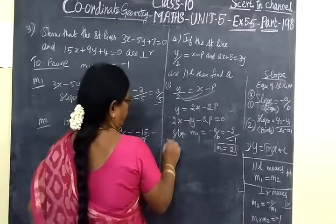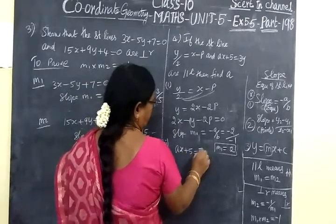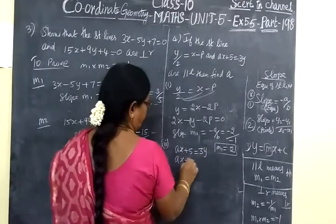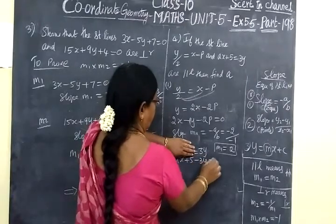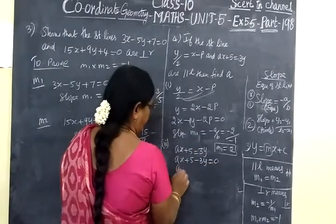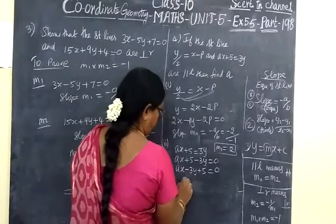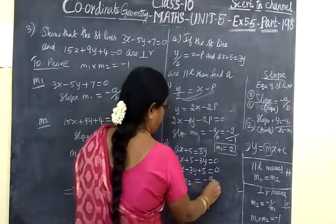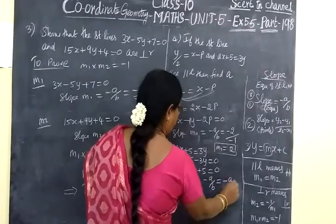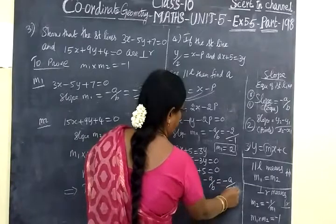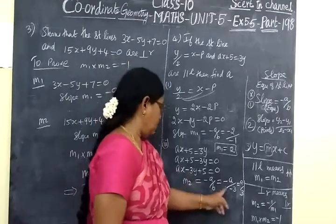Next, take the second equation: Ax plus 5 equal to 3Y. Converting to standard form with sign change: Ax plus 5 minus 3Y equal to 0. Write in standard form: x term, y term, then constant term equal to 0. So second slope M2 equal to minus A by B. Minus A value is A, by B value minus 3. So this is equal to A by 3.